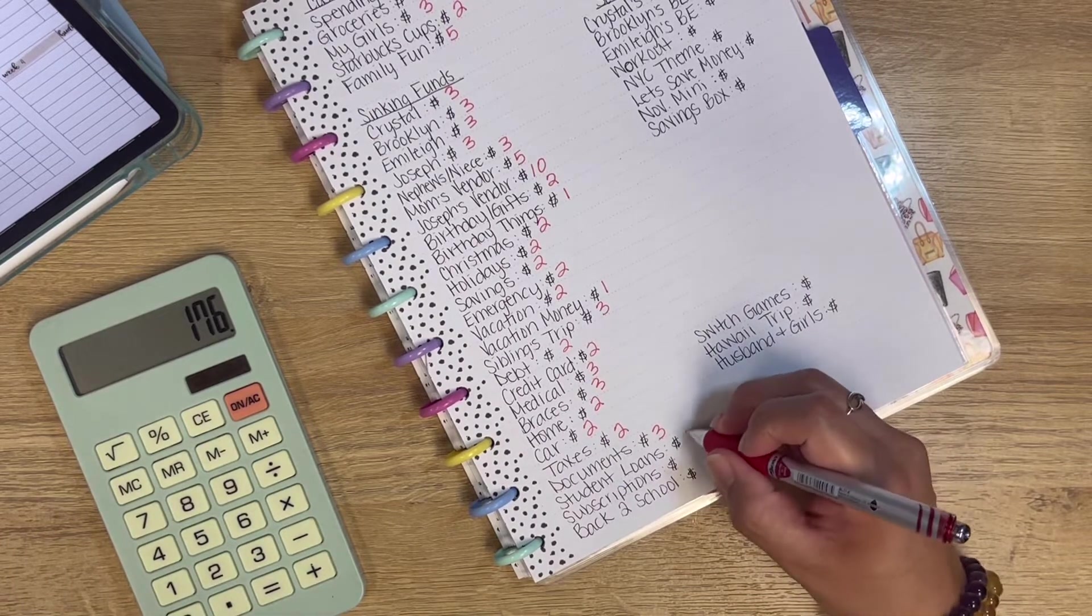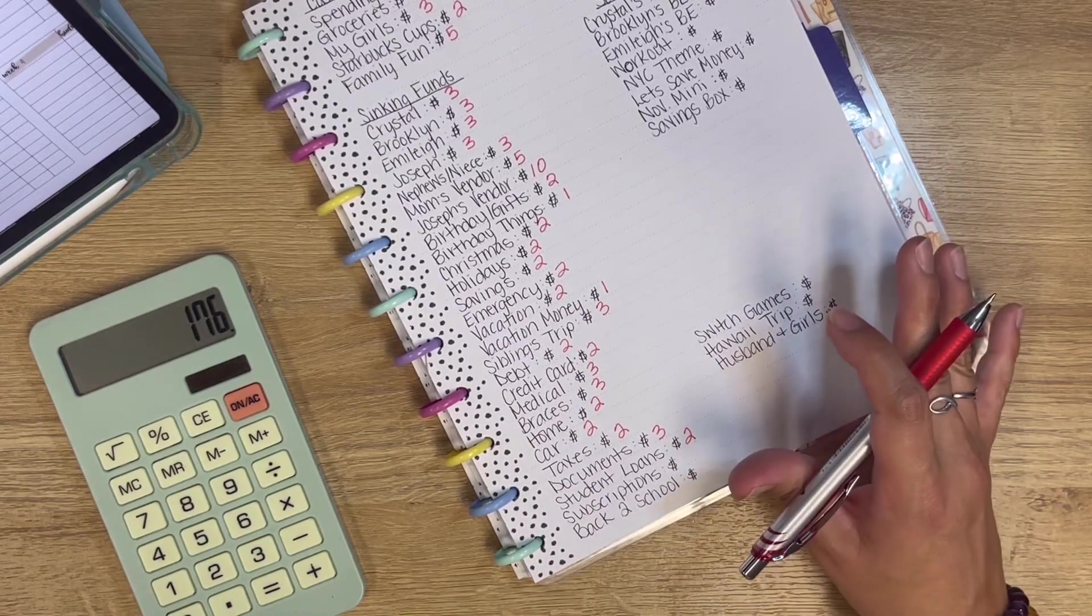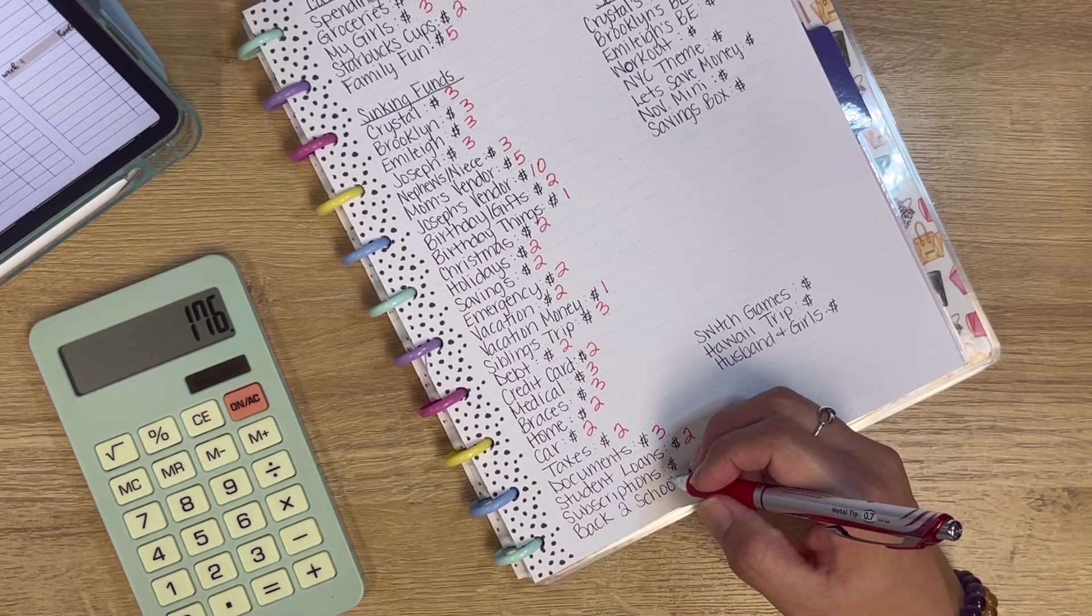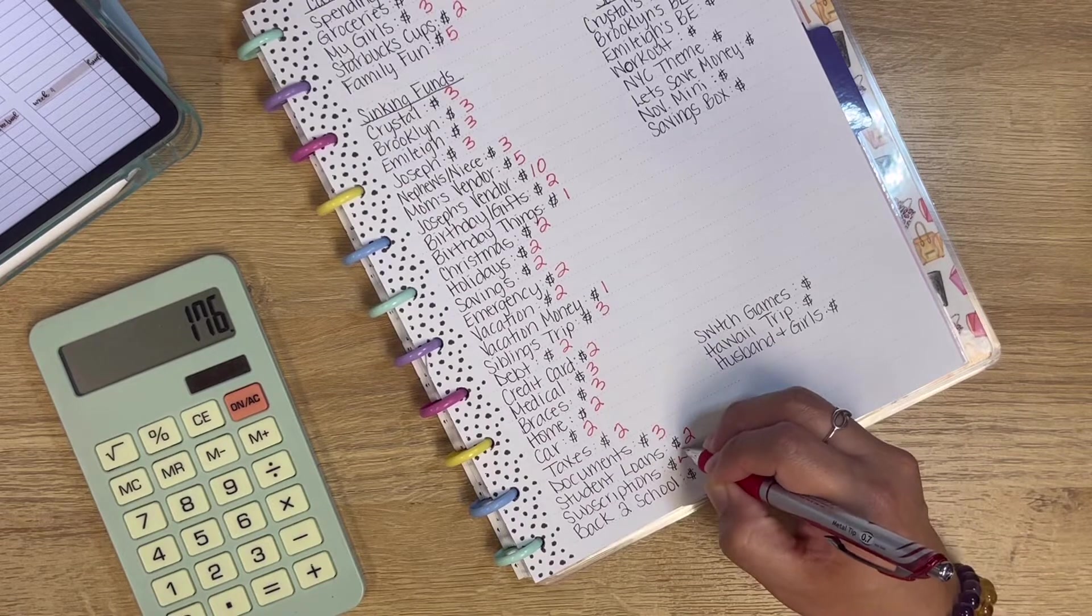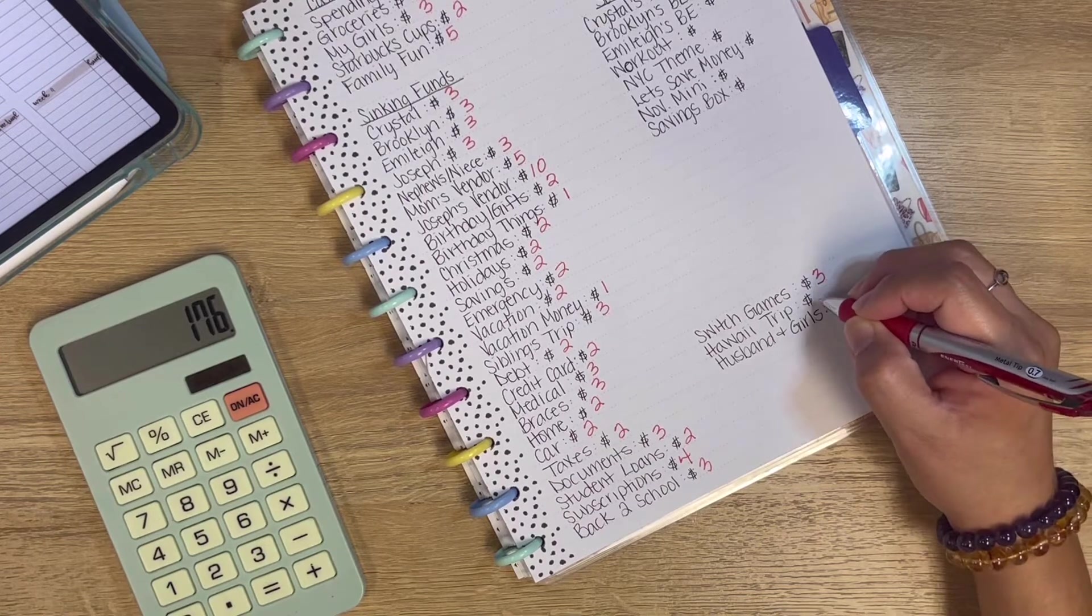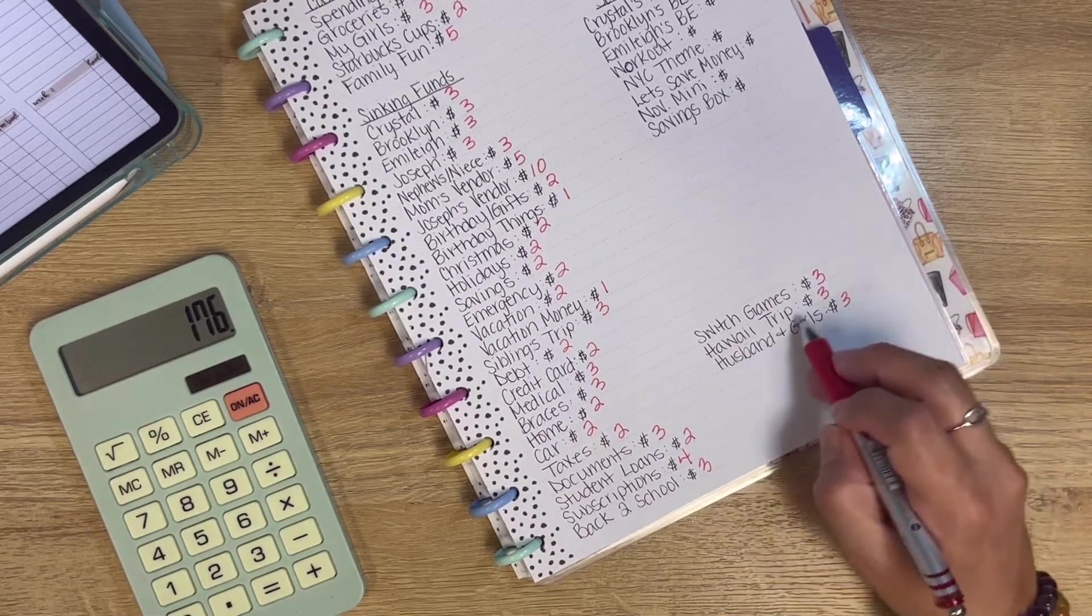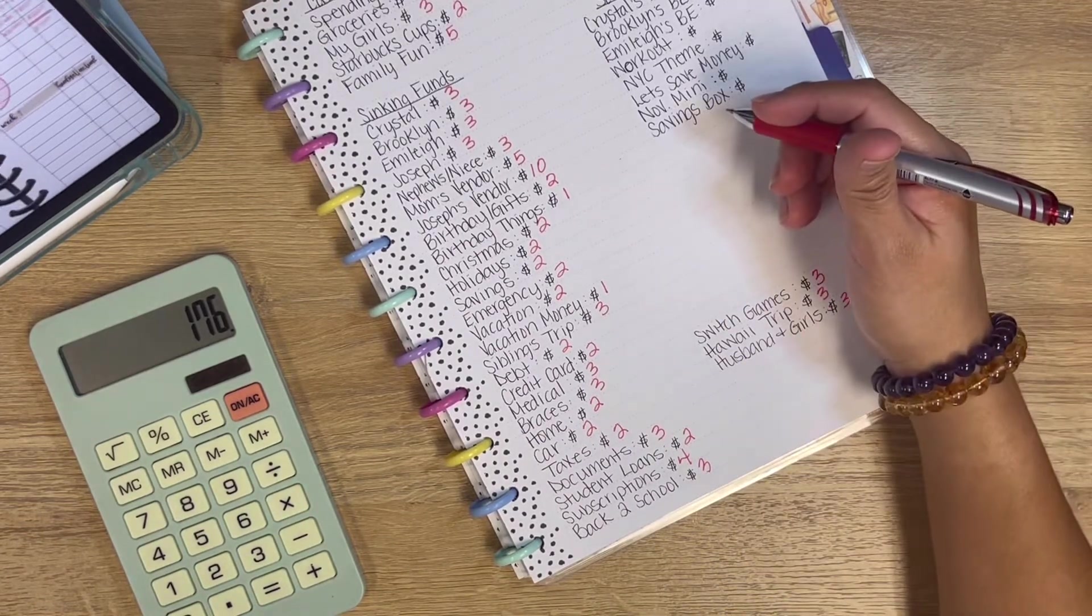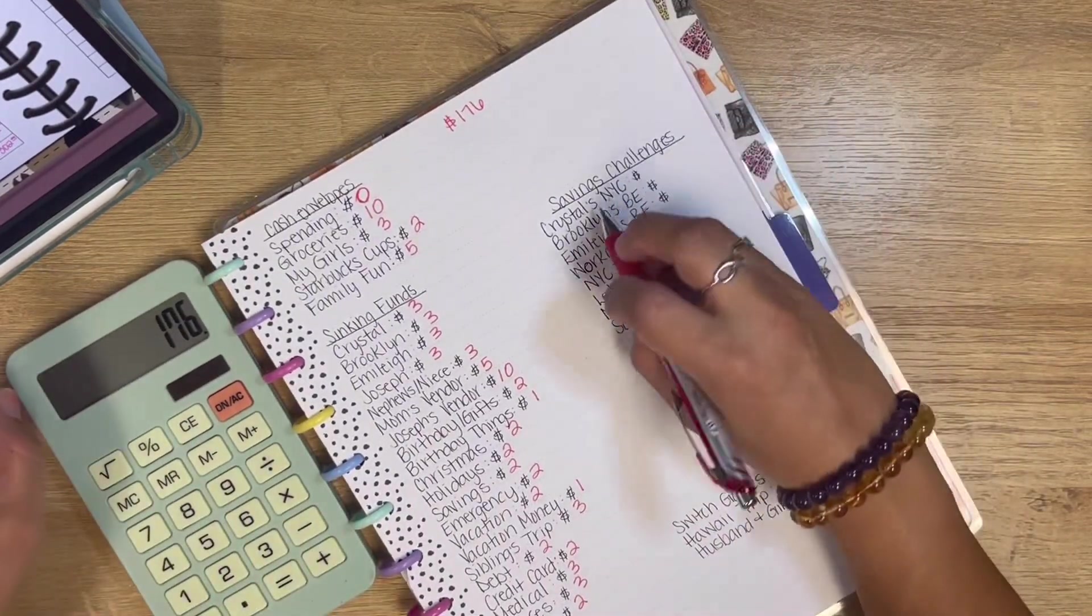Student loans, $2. And I did apply for that student loan forgiveness thing. So hopefully that goes through for me. Subscriptions, we're adding $4. Back to school, $3. Switch games, $3. Hawaii trip, $3. And my husband and girls, $3. And this one is for when I'm out of town. They have some extra little money to spend when I am gone.